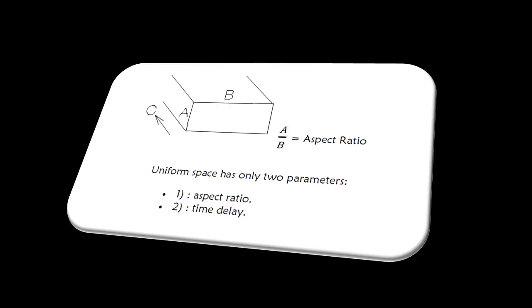Hello, a divided by b equals Aspect Ratio. Uniform space has only two parameters: 1 Aspect Ratio, 2 Time Delay.